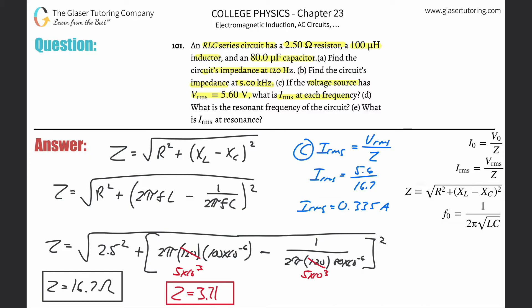That was for the first impedance. For the second one — 3.71 ohms — it's the same calculation: 5.6 divided by that exact answer. The RMS current is equal to 1.51 amps.